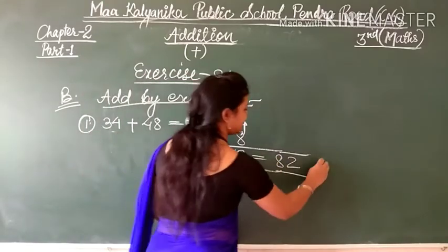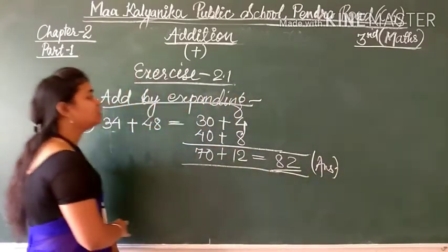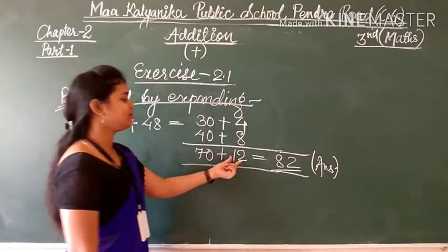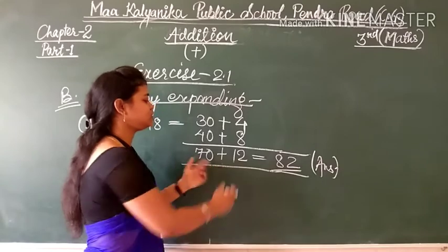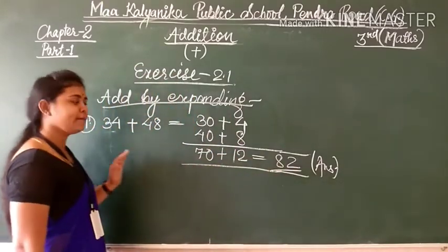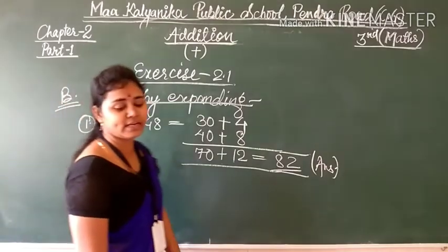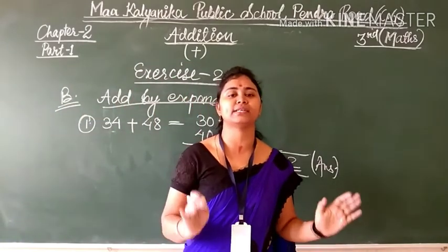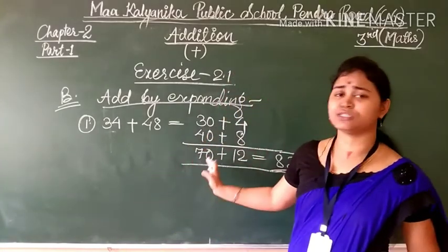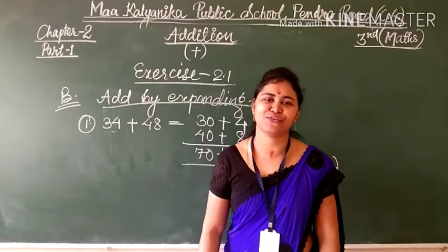So the answer received is 82. In this way you can add numbers by expanding. I hope you have understood Exercise 2.1 very easily and comfortably. You can solve the rest of the questions based on what I have solved here. Thank you for watching.